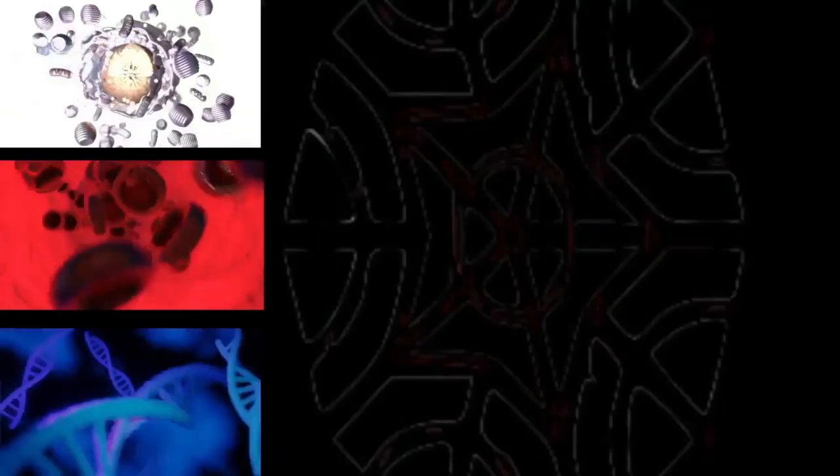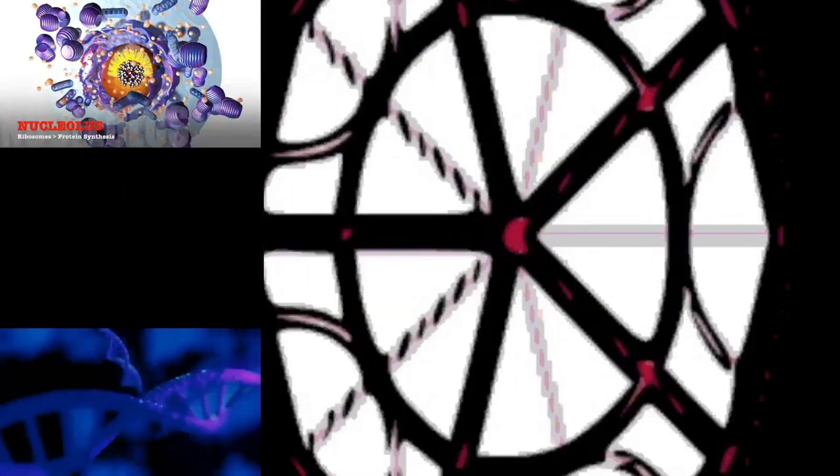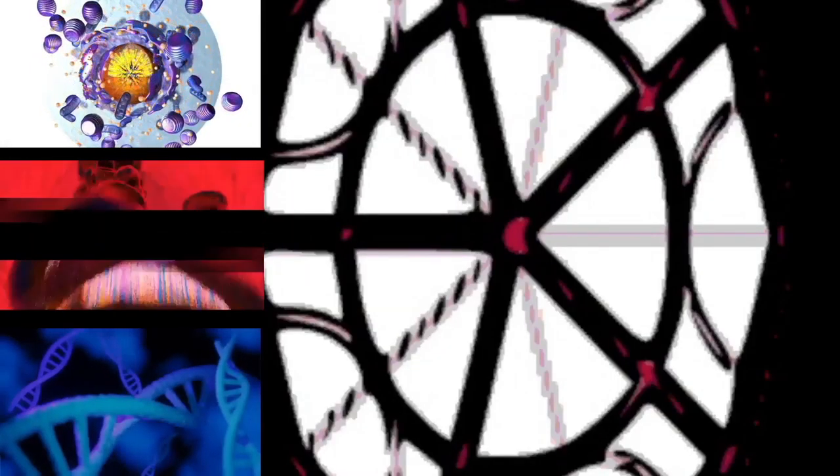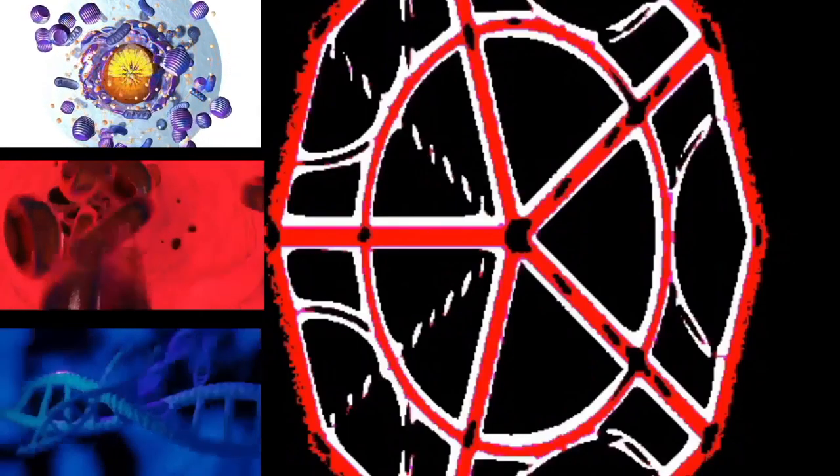Prokaryotic cell structure: Nucleoid. Description: area of the cytoplasm that contains the prokaryote's single DNA molecule. Prokaryotic cell structure: Glycocalyx, only in some types of prokaryotes. Description: a glycoprotein-polysaccharide covering that surrounds the cell membranes.